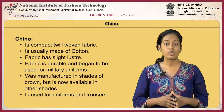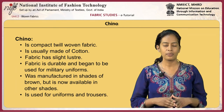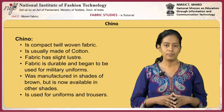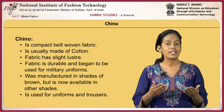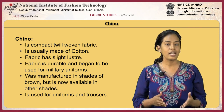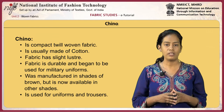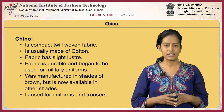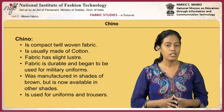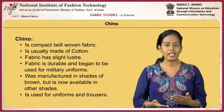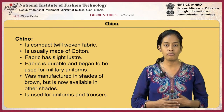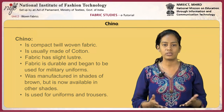Chino is a compact twill woven fabric, usually made of cotton. The fabric has slight lustre, is durable, and began to be used for military uniforms. It was originally manufactured in shades of brown but is now available in other shades. It is generally used for uniforms and trousers.